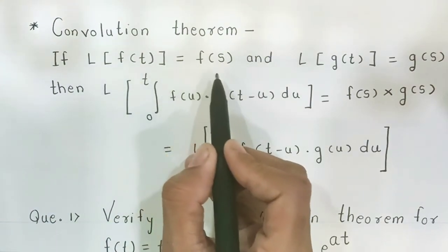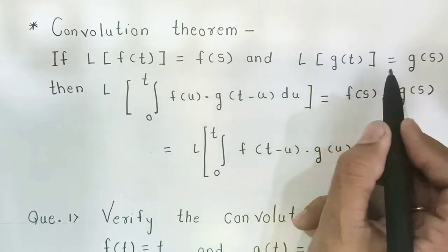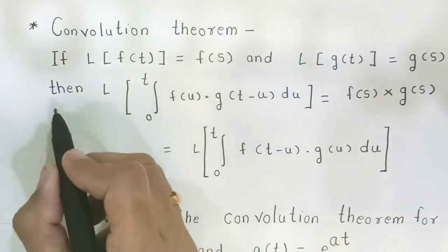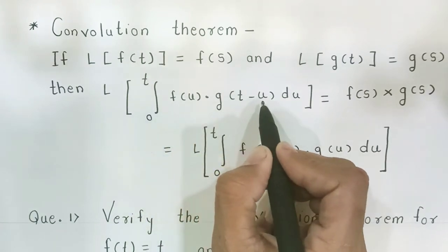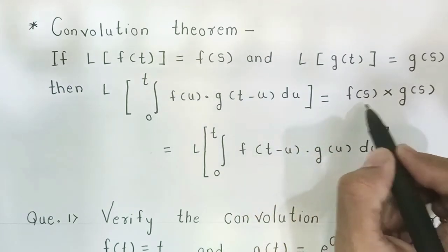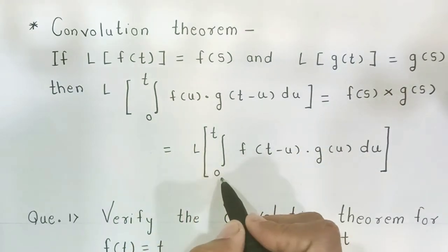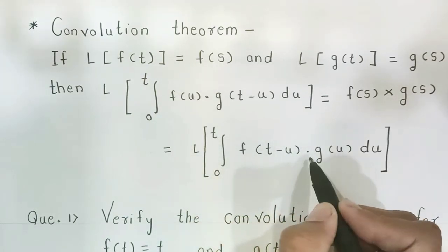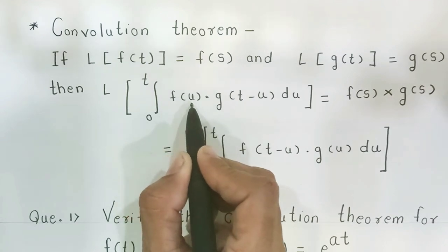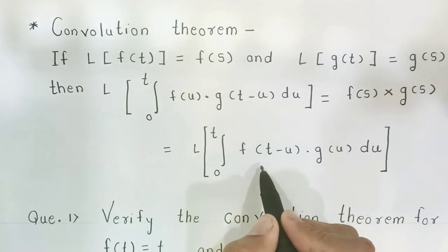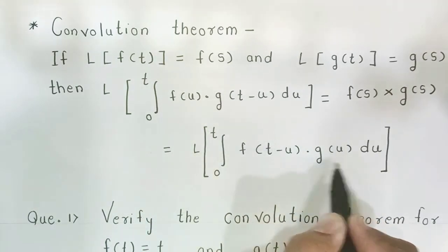If the Laplace of f(t) equals F(s), and for another function g(t) the Laplace of g(t) equals G(s), then the Laplace of the integral from 0 to t of f(u)·g(t−u) du is exactly equal to the product F(s)·G(s). It is also equal to the Laplace of the integral from 0 to t of f(t−u)·g(u) du — we simply interchange the two functions.